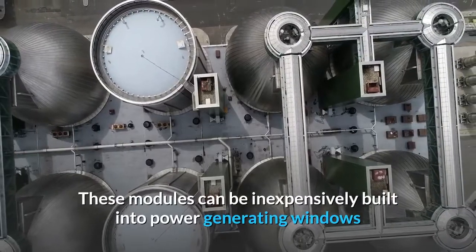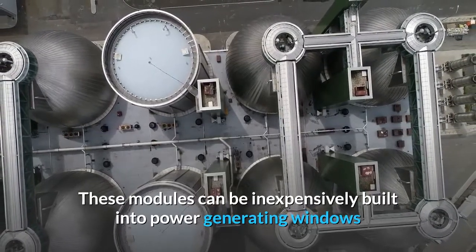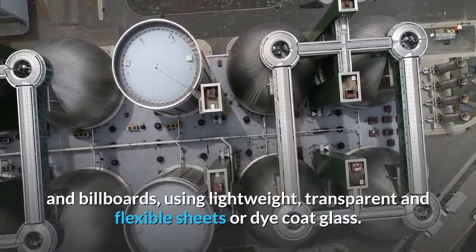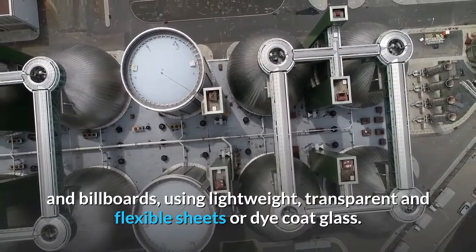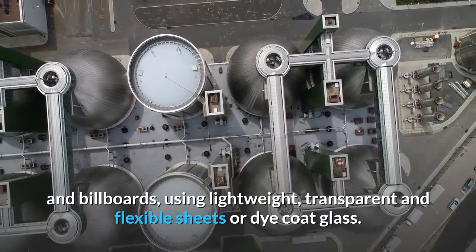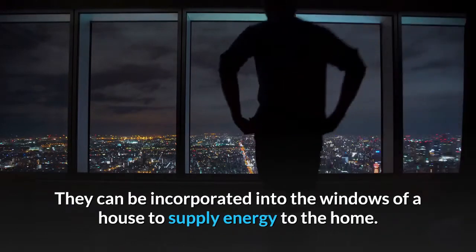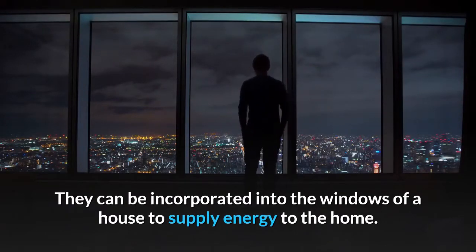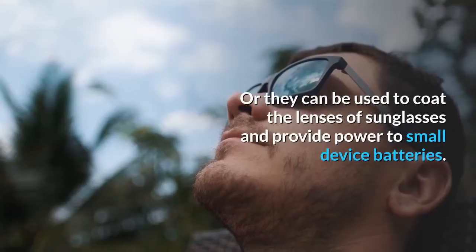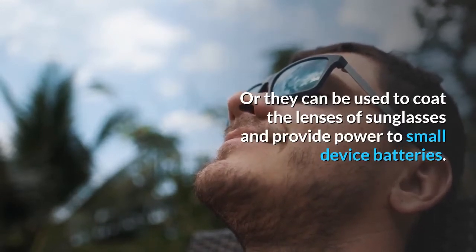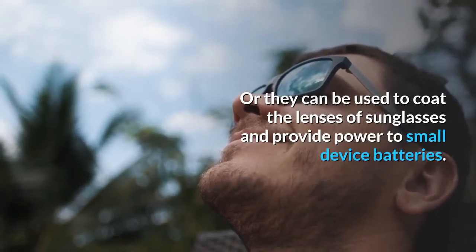These modules can be inexpensively built into power generating windows and billboards using lightweight transparent and flexible sheets or dye-coated glass. They can be incorporated into the windows of a house to supply energy to the home, or they can be used to coat the lenses of sunglasses and provide power to small device batteries.